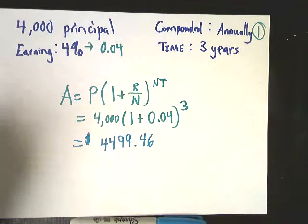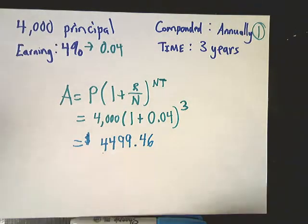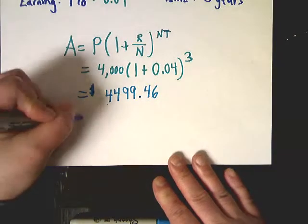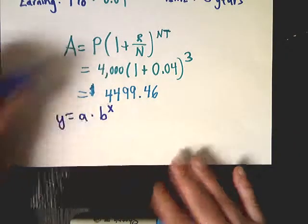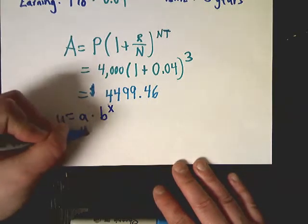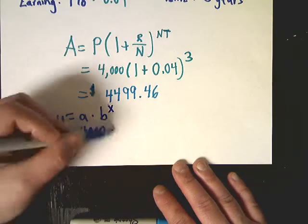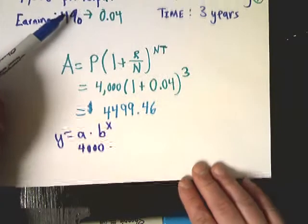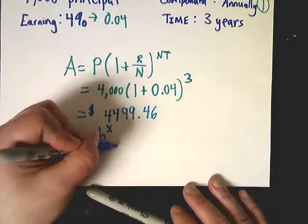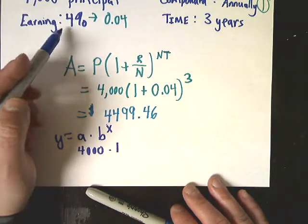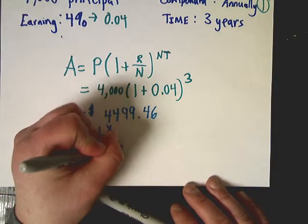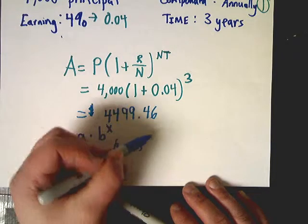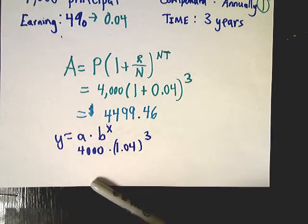That will be my balance after 3 years of doing that. So that's the setup. If I wanted to do it, by the way, from the original idea of exponential growth, it makes sense. The a part would be the initial balance. The b part would be the growth factor, which is in this case 1.04. And then I'd raise that to the number, which would be 3. So it works out to be the same thing. That's just where it comes from.